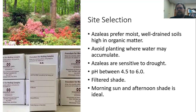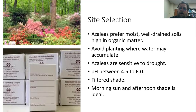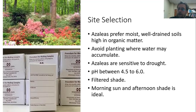One thing that makes azaleas stand out in terms of care is that they prefer a fairly acidic pH. Most landscape plants prefer around 6.5, but azaleas prefer a pH range of about 4.5 to 6. This is something to consider when you do your soil test and make sure you're getting your fertilization right.